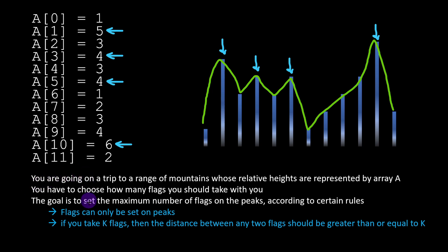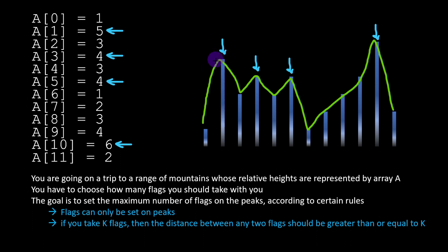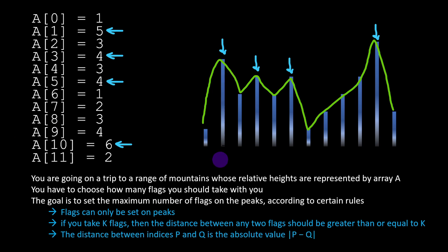The distance between two positions p and q, or two indexes, is the absolute value of p minus q. For example, the first two peaks are at index 1 and index 3, so 3 minus 1 equals 2 — the distance between those two peaks is 2. So if I'm carrying only two flags, I could put the first flag on the first peak and the second flag on the second peak, because we are respecting the minimal distance rule.